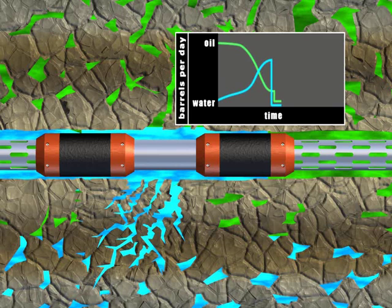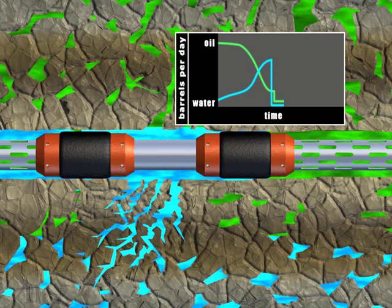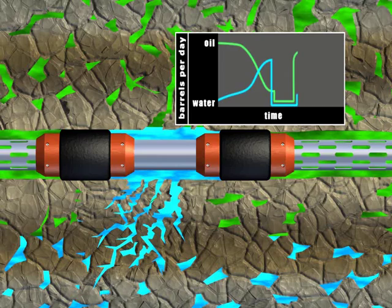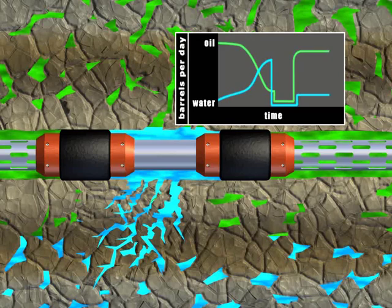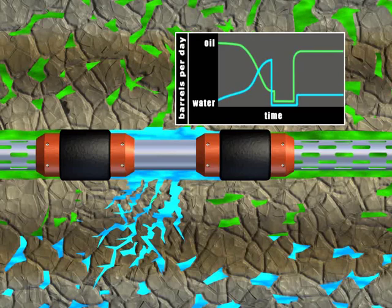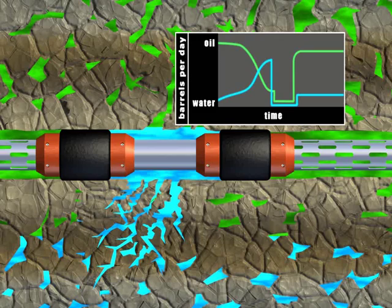In contact with produced water, the FreeCap elastomer begins to react and swell until contact with the wellbore is made, resulting in isolation of the high permeability section, which restricts water production and increases oil production.